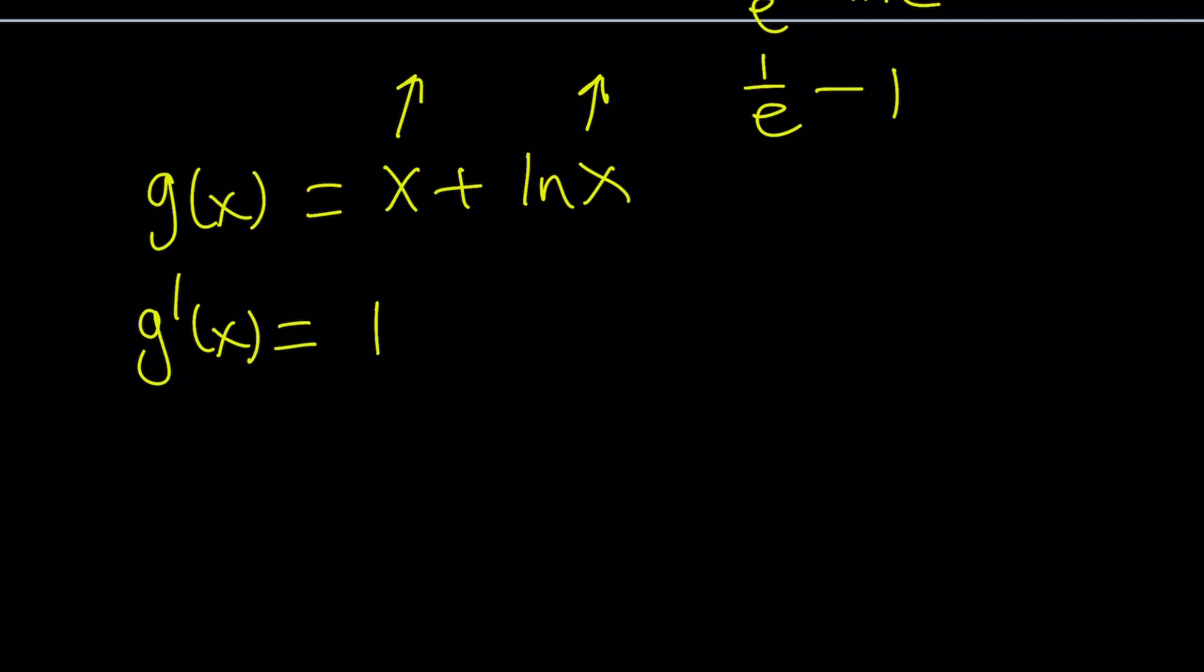Derivative of x is 1. And the derivative of ln x is 1 over x. Now, if x is positive, this is positive. And x is positive because for ln function, x must be positive. Makes sense. g prime is always positive, which means g is increasing. And if a function is increasing, it's only going to intersect the horizontal line at a single point.